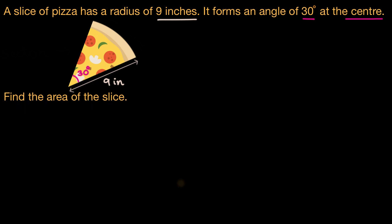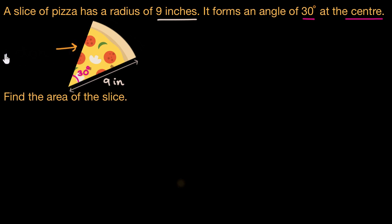So we need to figure out the area of the slice using this information. We can think of this slice as a part of a big circular pizza. This slice is actually a sector of that big circular pizza.